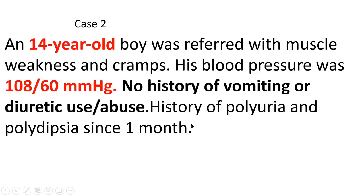Moving on to Case 2: a 14-year-old boy referred with muscle weakness and cramps. His blood pressure is normal, no history of vomiting or diuretic abuse, and he has some history of polyuria and polydipsia since one month.